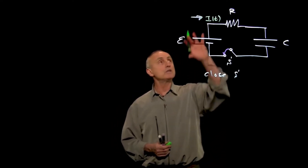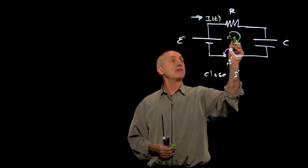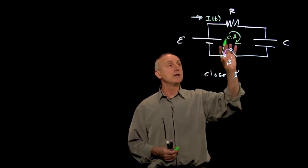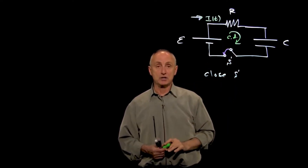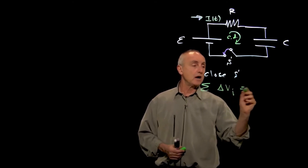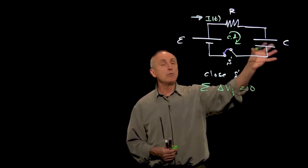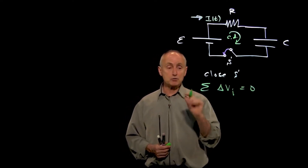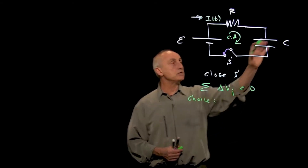To analyze capacitors, we've already shown that we have our two choices: the direction of current and a circulation direction. We're going to apply the same principle — delta V around a closed path is zero. And now we have to think about the capacitor. Our new choice is to decide which plate gets which charge.